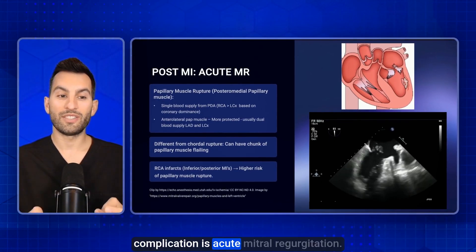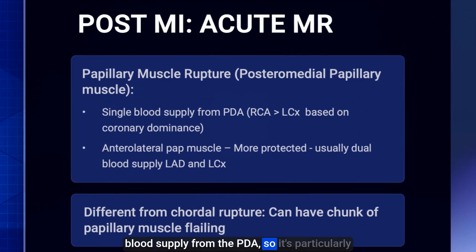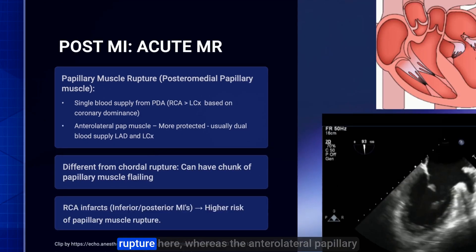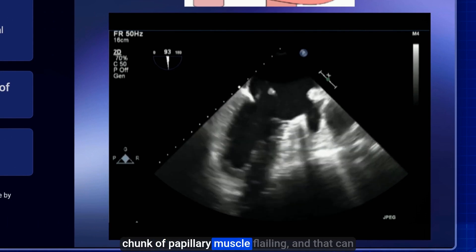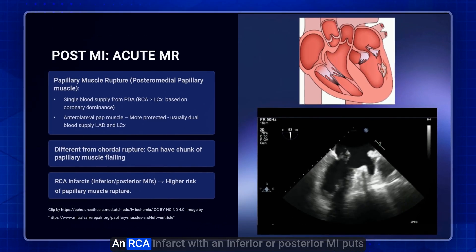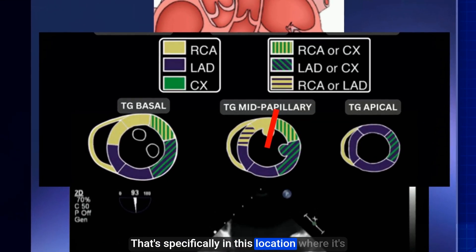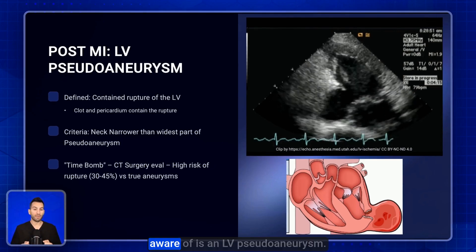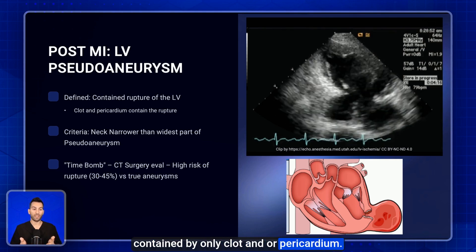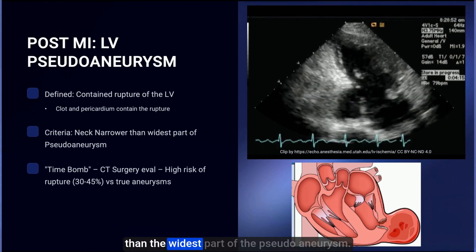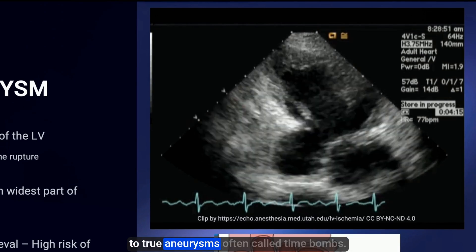Acute mitral regurgitation is another critical mechanical complication. The posteromedial papillary muscle has a single blood supply from the PDA, making it particularly prone to ischemic events and rupture, while the anterolateral papillary muscle is more protected. On echo, you can see a chunk of papillary muscle flailing, which can differentiate this from a chordal rupture. An RCA infarct with an inferior or posterior MI places the patient at higher risk. LV pseudoaneurysm is a contained rupture of the left ventricle, held by clot and/or pericardium, defined by a neck narrower than the widest part of the pseudoaneurysm. These carry very high rupture risk and require urgent CT surgery evaluation — often called time bombs.